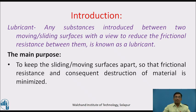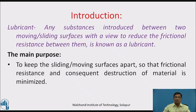Introduction — lubricant. As we are considering lubricants, their acid value and saponification value, it is very necessary to learn what we mean by a lubricant. A lubricant is any substance introduced between two moving or sliding surfaces with a view to reduce the frictional resistance between them. The main purpose of a lubricant is to keep the sliding or moving surfaces apart so that frictional resistance and consequent destruction of material is minimized.